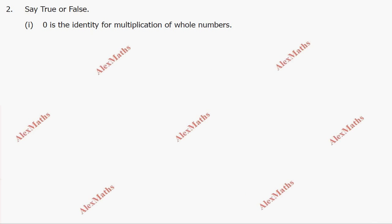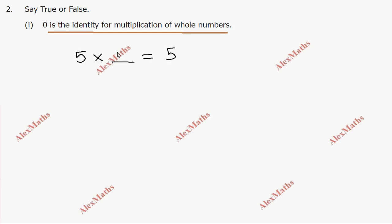Question number 2: say true or false. First statement — 0 is the identity for multiplication of whole numbers. For example, 5 multiplied by 0 equals 0, not 5. So 0 is not the identity for multiplication. The identity for multiplication is 1. Therefore this statement is false.